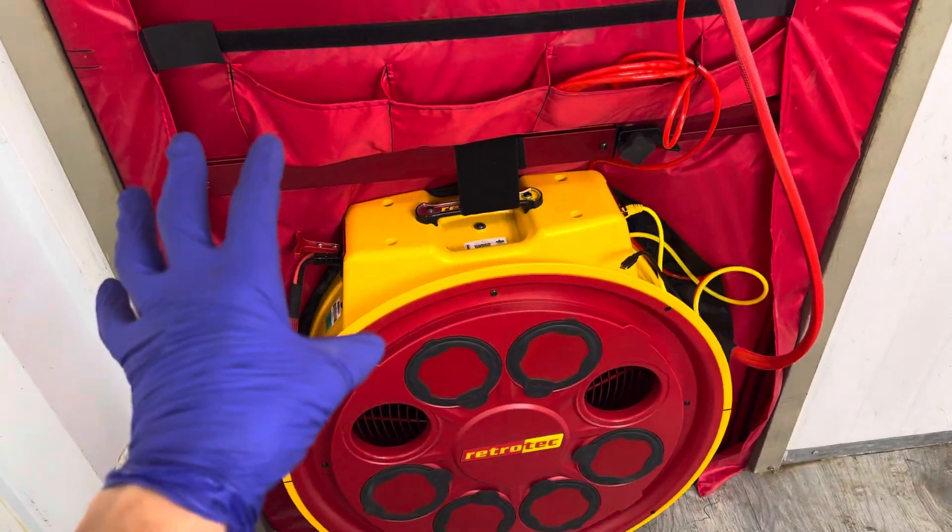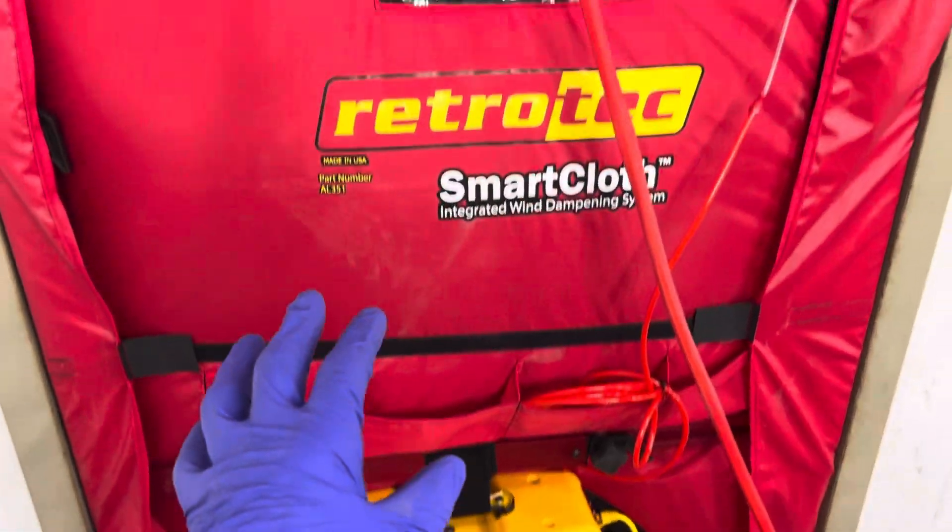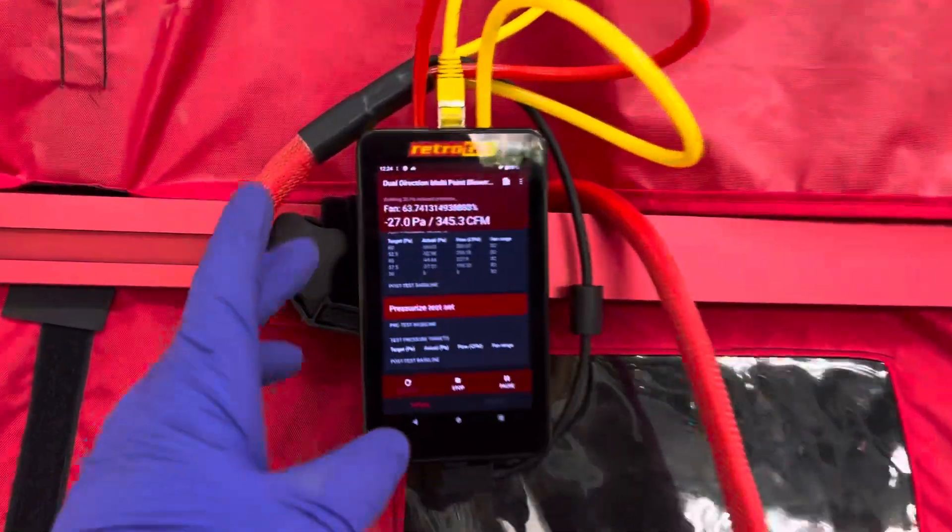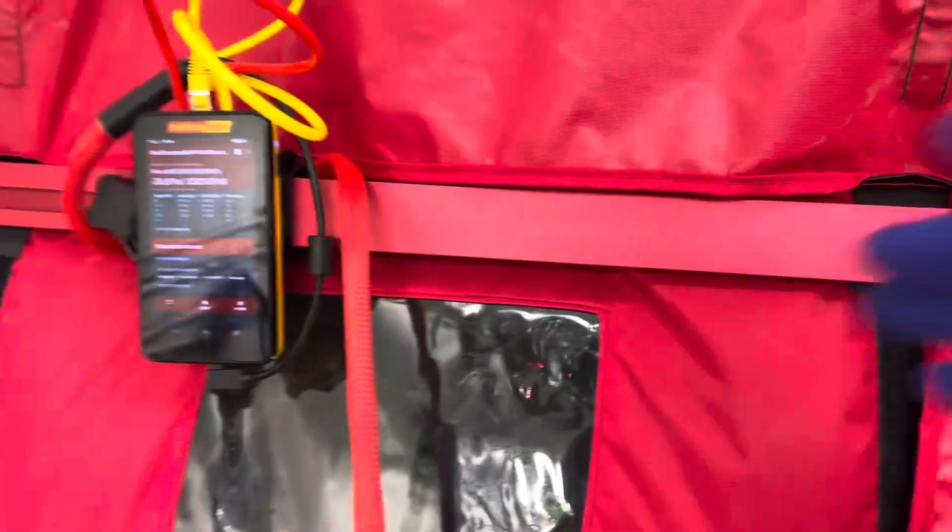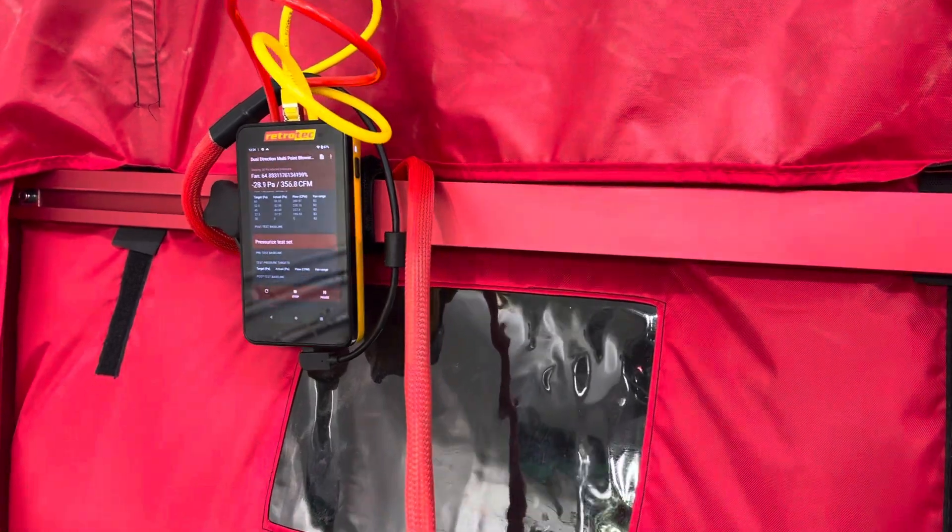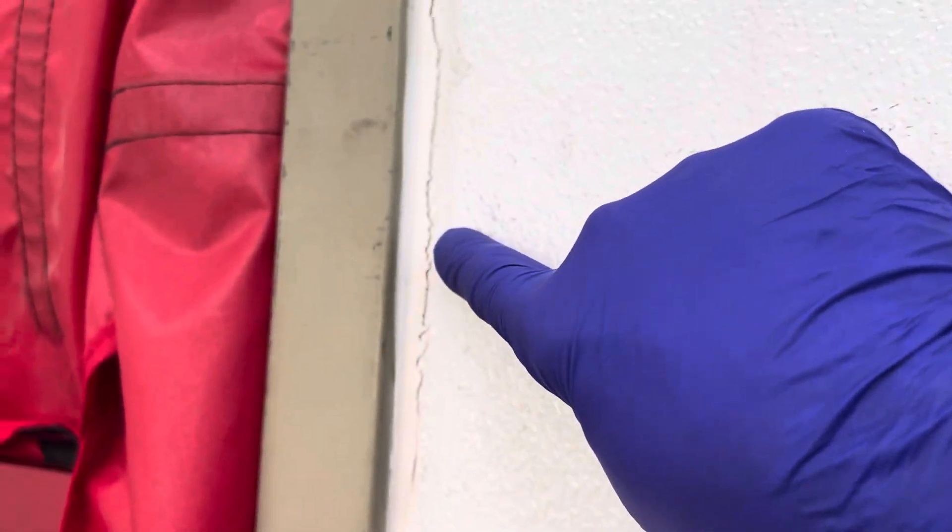So performing a pressure and depressurization test, blower door test, not only do you find what rating you're at, but little things like this. You see that little tiny crack? When I put my arm right here, I'm being hit with cold air.